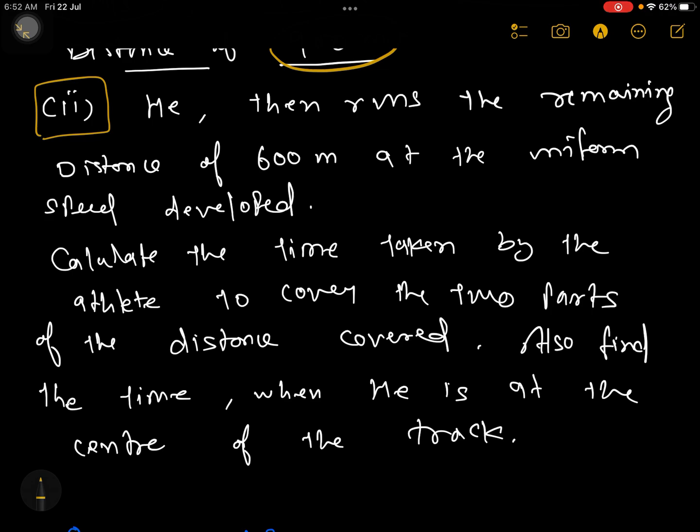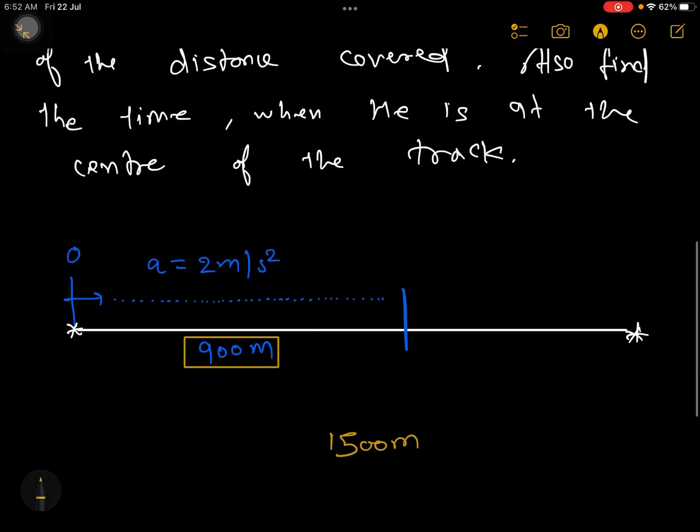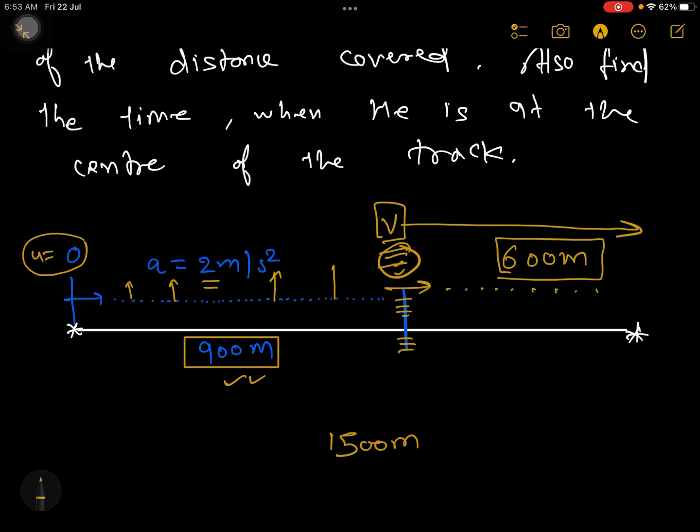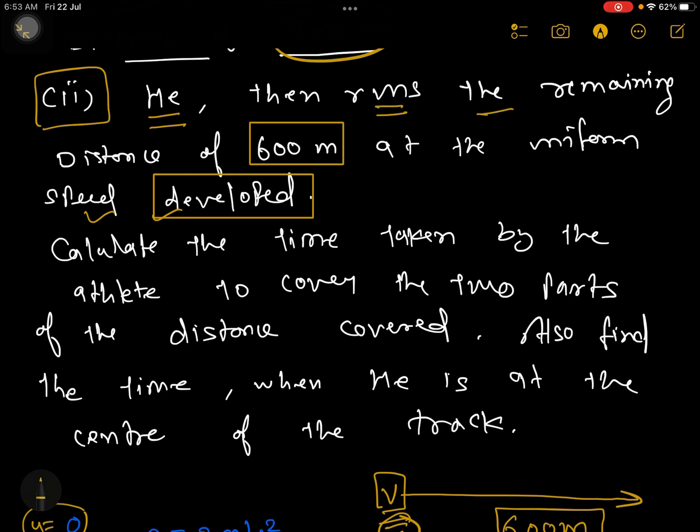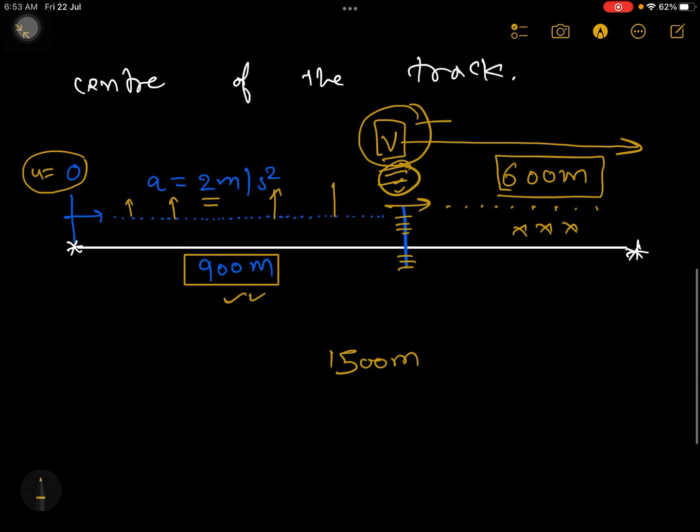He then runs the remaining distance of 600 meter at the uniform speed developed. Here you have a catch point - why they are using the word developed. Actually here they are trying to show that because of acceleration, the u equal to zero velocity will increase and you'll be having here certain velocity. Whatever final velocity you are reaching at this location, that final velocity is going to be constant for the remaining 600 meter. The remaining distance of 600 meter is at uniform speed, whatever speed is being developed here will not change, speed should be constant.